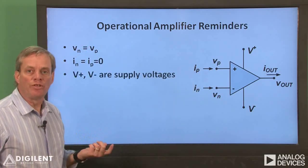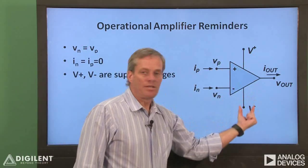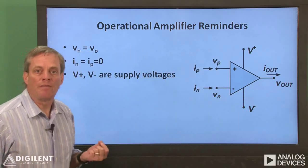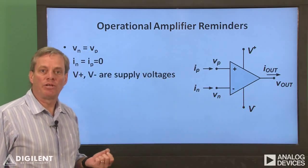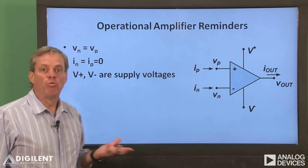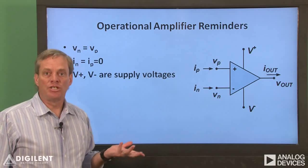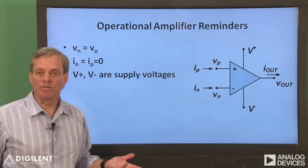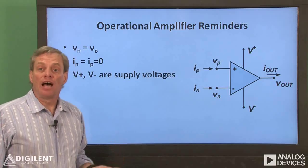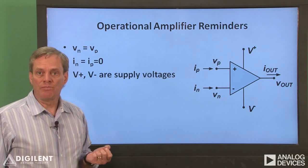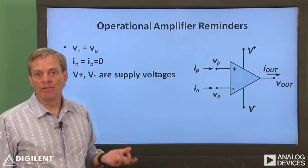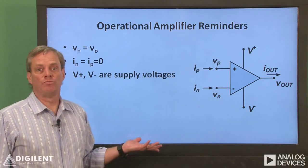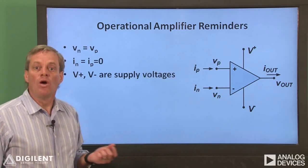Two of the terminals, V-plus and V-minus, are used to provide power to the operational amplifier. The op-amp will not function if you don't apply power to these terminals. To complicate things, these terminals are sometimes not even evident on circuit diagrams — we just assume that they're there and let it go at that.